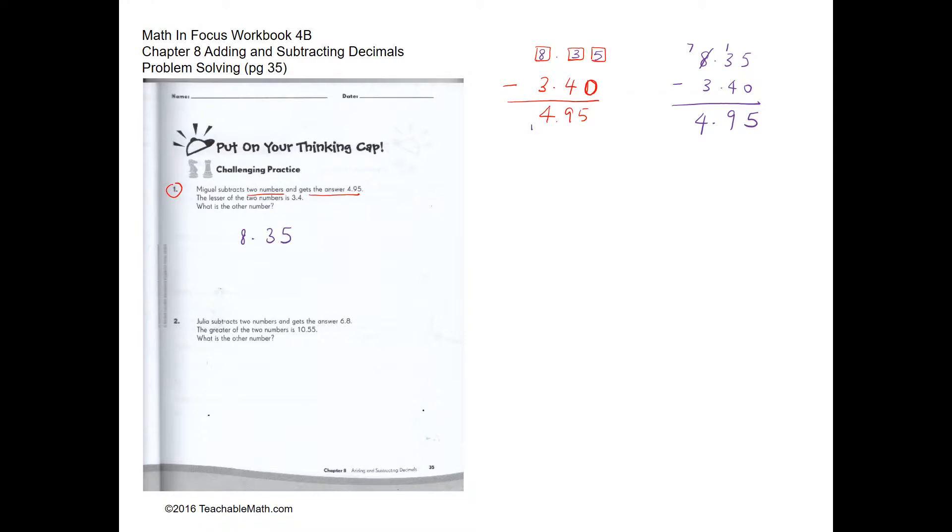So next question, we're going to do something similar. So we're going to subtract two numbers and the answer is 6.8. So the greater of the two numbers is 10.55. So we are going to subtract and we are going to figure out what this number is.